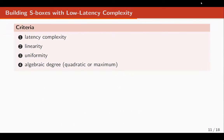Our search criteria, in priority order, are: low latency complexity, then minimum possible linearity, then minimum uniformity. We later also add the requirement that algebraic degree be quadratic or as high as possible. We prioritize linearity over uniformity because linearity can be checked from coordinate functions alone, whereas uniformity requires the full S-box.